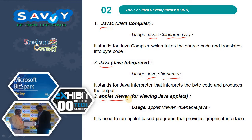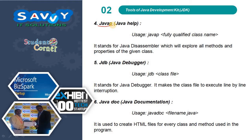The next tool is Applet Viewer, used for viewing Java applets. The command is: appletviewer filename.java. Another tool is jdb — the Java Debugger — which executes the class file line-by-line; the command is: jdb classname. javadoc is used to create HTML documentation files for every class and method used in the program.